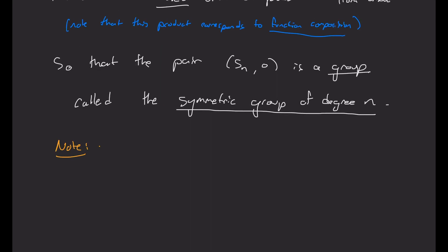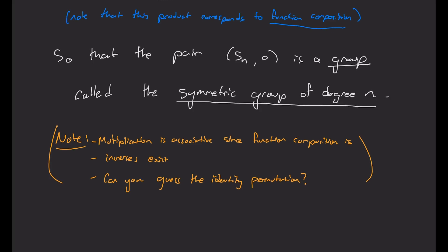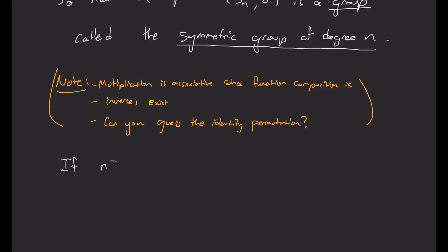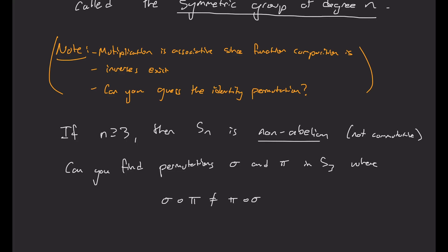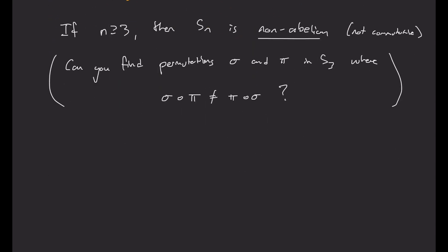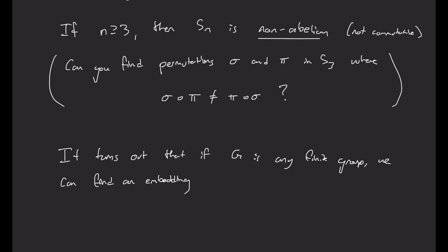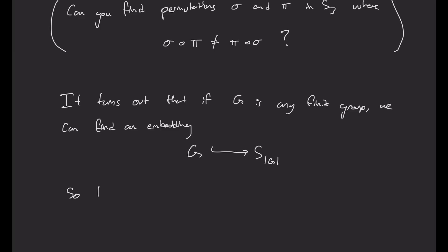Checking a few details: multiplication is associative since function composition is, and we saw that inverses exist. Can you guess what the identity permutation is? Furthermore, if n is greater than or equal to 3, then S_n is non-abelian — it's not a commutative group. Can you find permutations sigma and pi in S_3 where sigma∘pi is not the same as pi∘sigma? One reason to study these is that if G is any finite group, then we can find an embedding of G into S_{|G|}. So in some sense, the S_n contain all finite groups, which is maybe why they're called the symmetric groups.